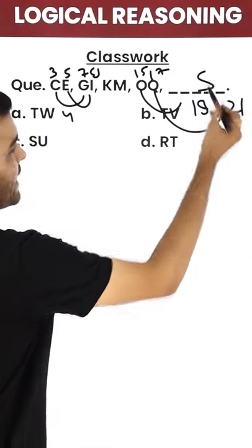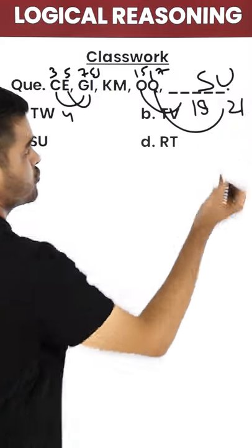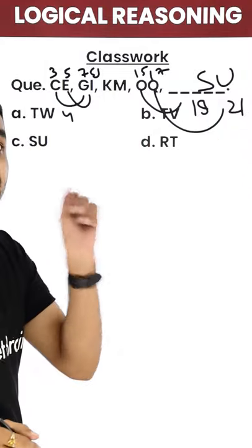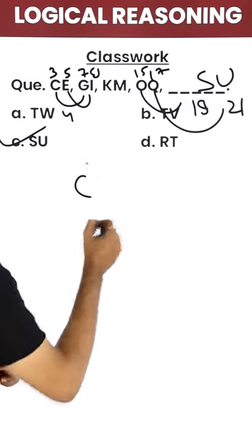What is 19? S. What is 21? We have U. So positioning of the numbers depending on the alphabet. So S, U should be my option. Option C.